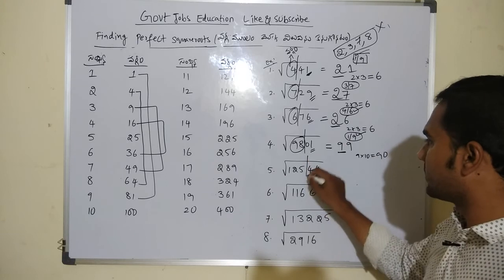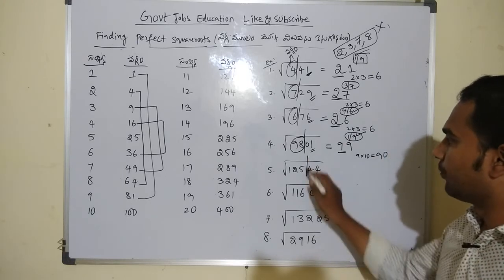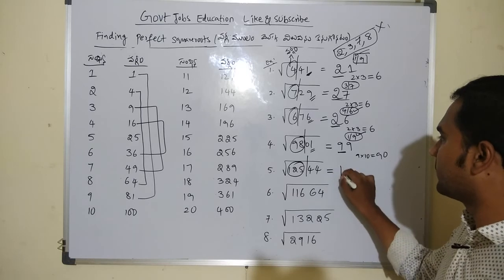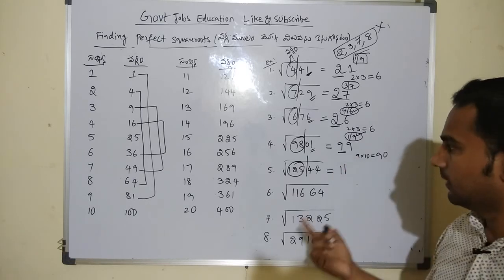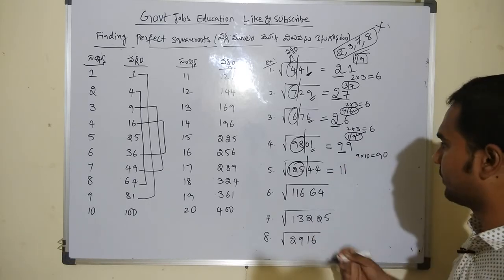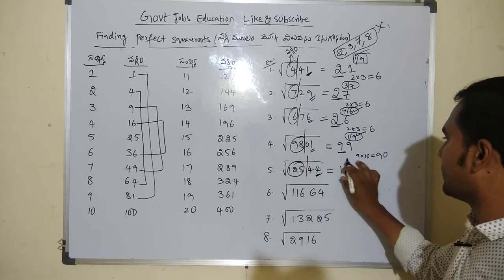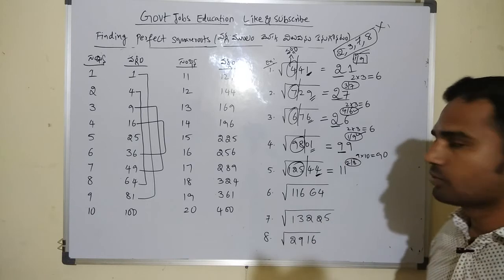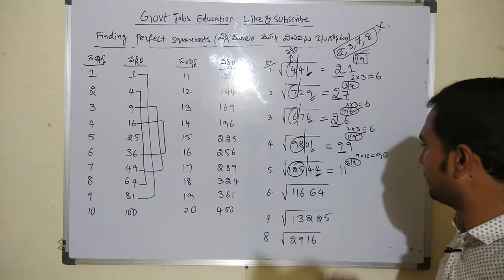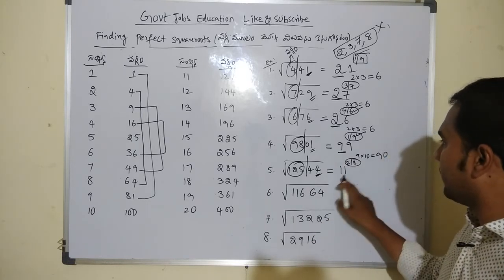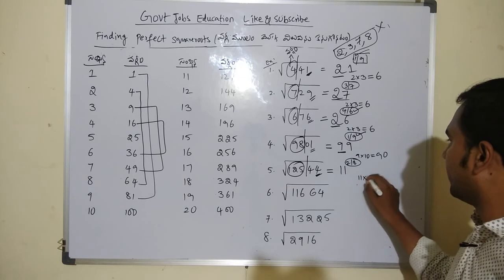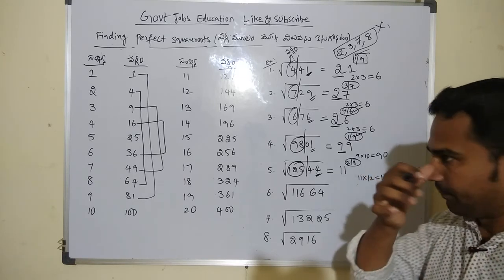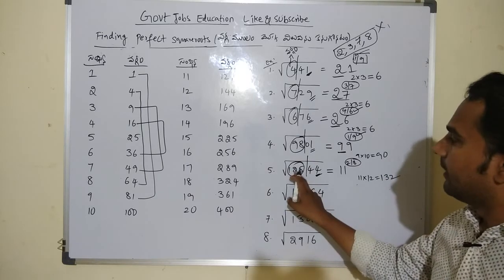Problem: 12544. Left side is 125. The nearest perfect square is 121, so 11 is the root digit. Unit value is 4, giving candidates 2 or 8 — so 112 or 118. 11 multiplied by 12 is 132. Left side 125 is less than 132, so we take the lesser number. The answer is 112.